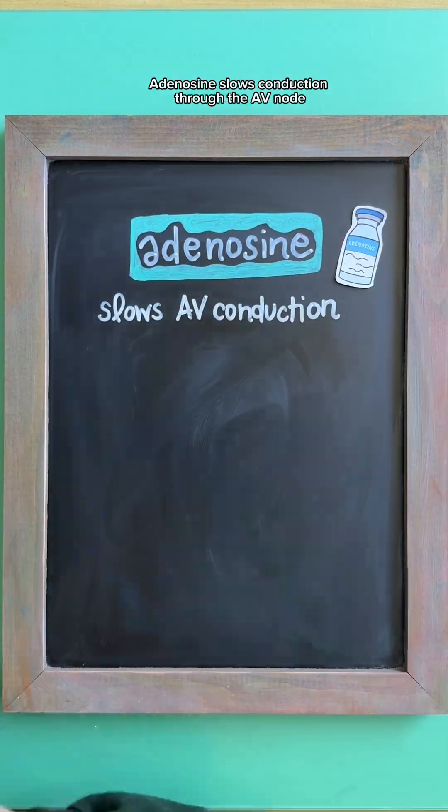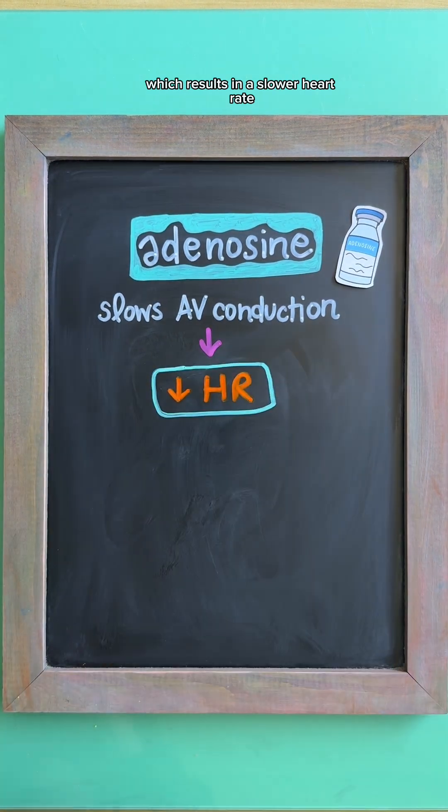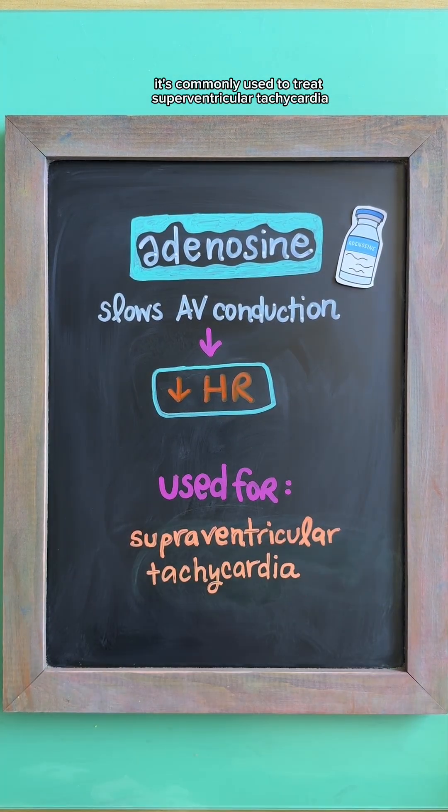Adenosine slows conduction through the AV node, which results in a slower heart rate. It's commonly used to treat supraventricular tachycardia.